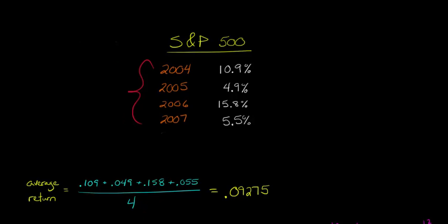Now that gives us 0.09275. So in other words, the return was 9.275%, but we're going to use that number in order to compute our volatility, because remember our volatility is basically just going to be the standard deviation of these returns.